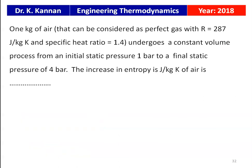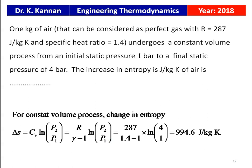From the 2018 question paper: 1 kg of air (R = 287 J/kgK, γ = 1.4) undergoes a constant volume process from 1 bar to 4 bar. For a constant volume process, ΔS = Cv·ln(P2/P1). Cv = R/(γ−1) = 287/0.4. Substituting: ΔS = (287/0.4) × ln(4/1) = 994.6 J/kgK.